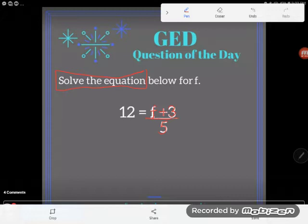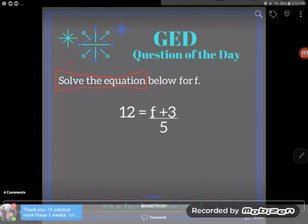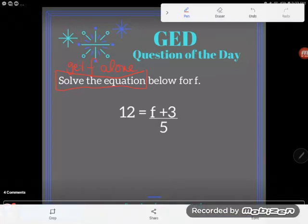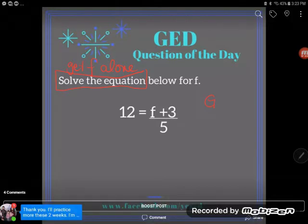Great. So in order to solve this equation, which of course means isolate the variable or get the letter alone. If I'm told to solve the equation for f, it means to get f alone so that I can figure out what f is equal to. I'm going to have to get rid of these two numbers, this 3 and this 5. And remember,